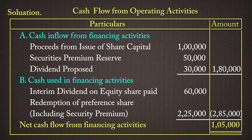Proposed dividend: increased from Rs. 1,50,000 to Rs. 1,80,000 — Rs. 30,000 increment recorded. Total cash inflow from financing activities: Rs. 1,00,000 plus Rs. 50,000 plus Rs. 30,000 equals Rs. 1,80,000, transferred to final cash column.